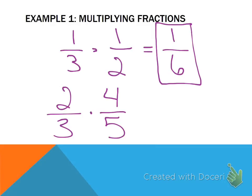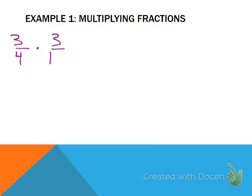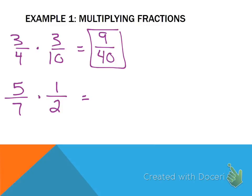Now I want you to multiply these fractions: 2 thirds and 4 fifths. 2 times 4 is 8, 3 times 5 is 15. So let's do two more, just multiplying straight across and reducing where necessary. What's the first one? 9 over 40. Very good. What about the second one? 5 over 14. Can't reduce either one.